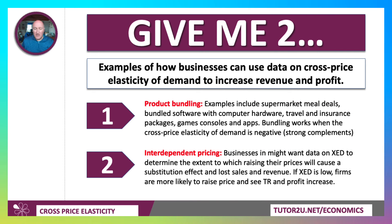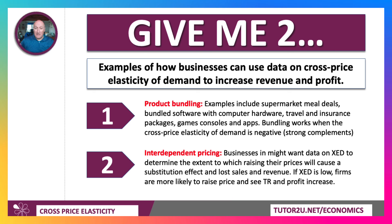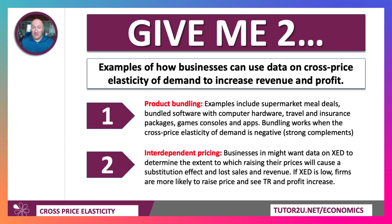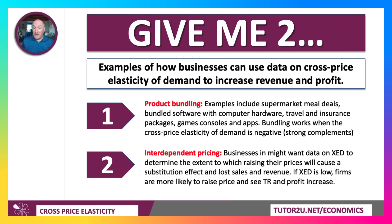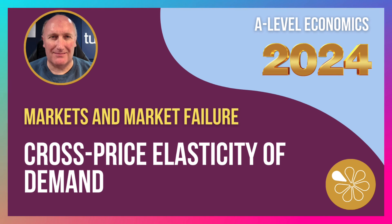How might businesses use data on cross-price elasticity to increase revenue and profit? First, businesses often use bundling, taking advantage of complementary relationships — examples include supermarket meal deals, bundling software with computer hardware, travel insurance and accommodation packages, and games consoles with apps. Bundling offers a bundle price with perceived value to the consumer and helps sell a lot of products. Second, interdependent pricing: businesses in an oligopoly might use cross-price elasticity data to determine the extent to which raising their prices will cause a substitution effect and lost sales. Typically, if the cross-price elasticity is low, firms are more likely to raise price and see revenue and profit go up.